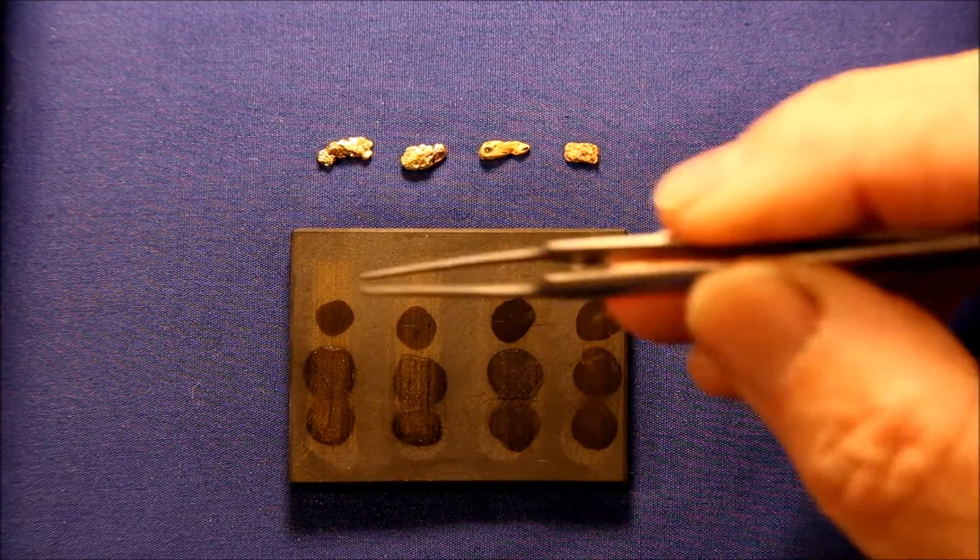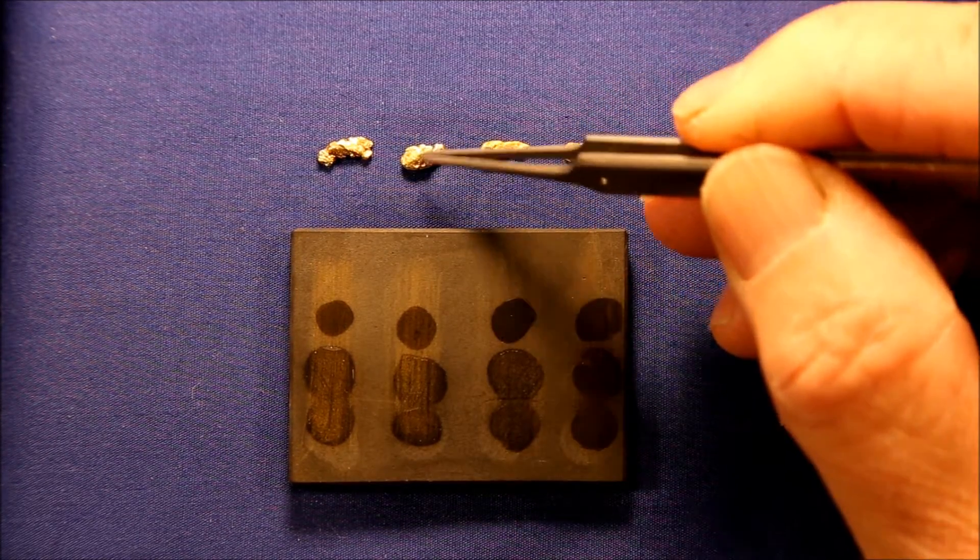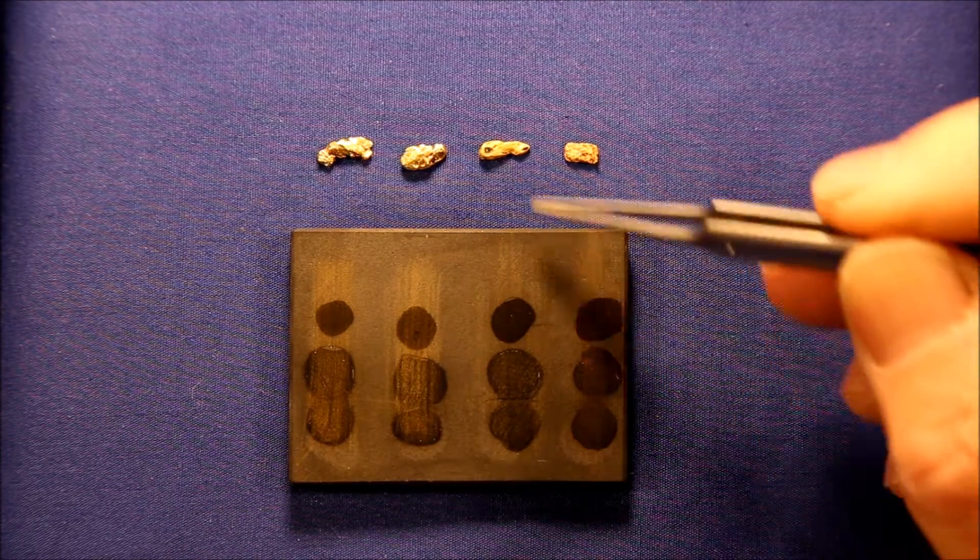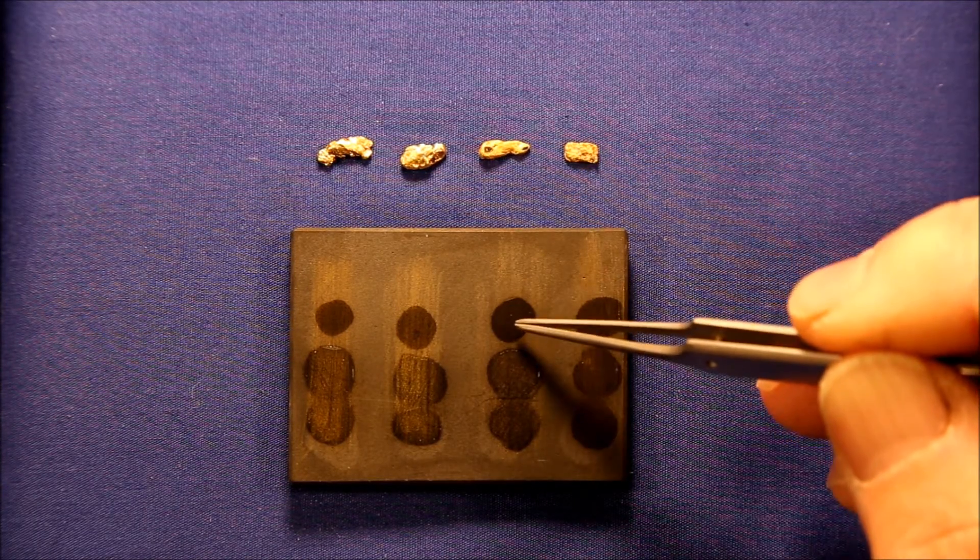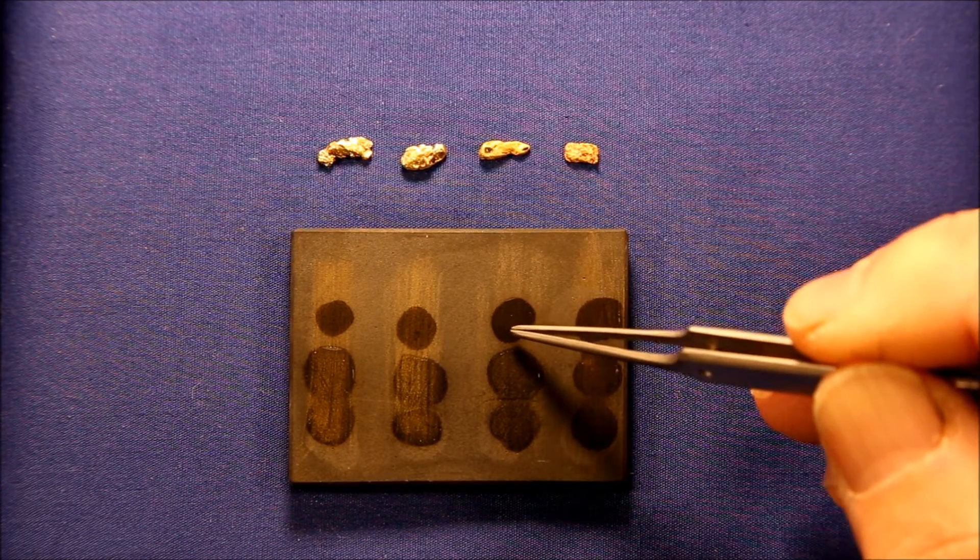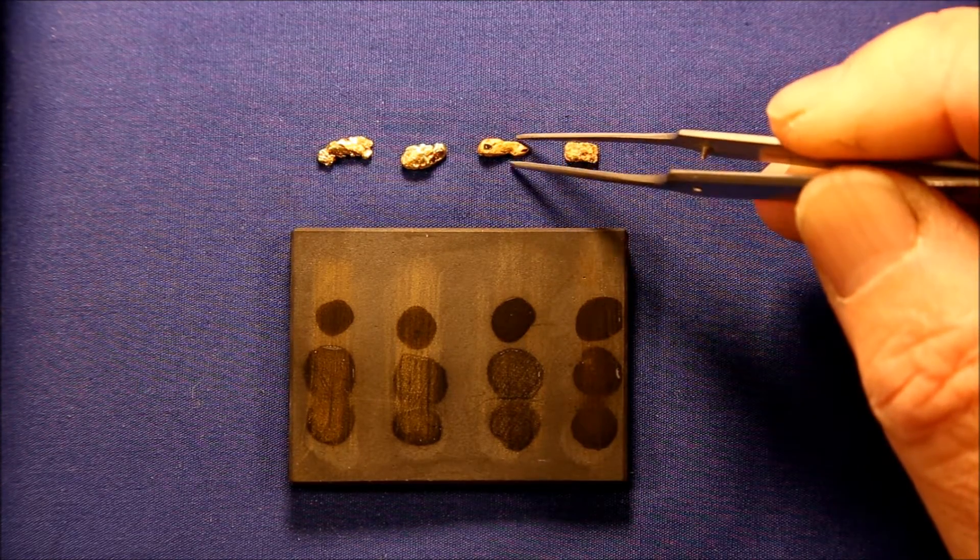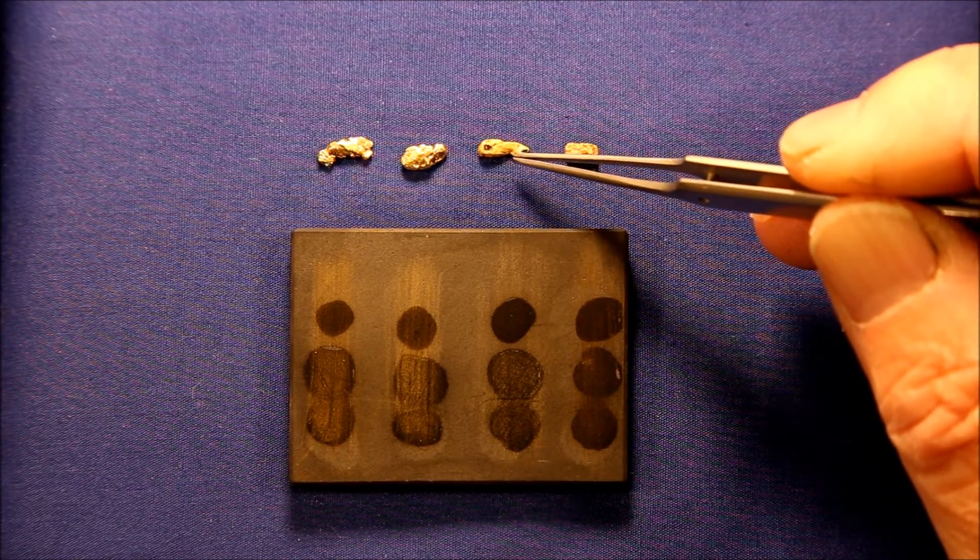You can see that the two that were bright yellow and shiny haven't had much of a reaction, but this dull one here has turned dark. That's a sign it's dissolving, so that this piece is less than 18 carat gold.